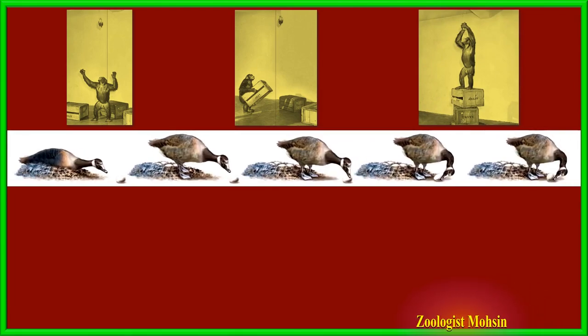A hungry chimp is put in a room with bananas hanging on the roof. She tried to reach the bananas by jumping but failed. Then she uses her experience and puts available boxes on one another to reach the bananas. When an egg of a goose is out of the nest, she puts it back by a side-to-side movement of her neck.